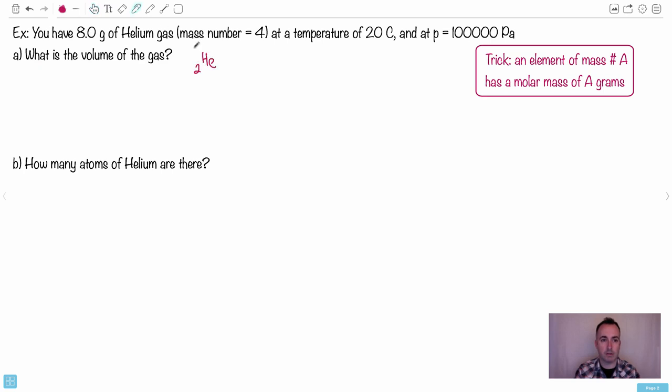You might remember that from atomic physics. Helium is He, which is 2,4—it's got four nucleons, we say. We know it has two protons, so we know it has two protons and then two neutrons. In this case, it's got a mass number of four.